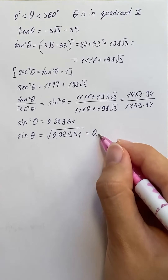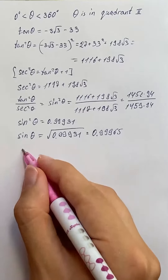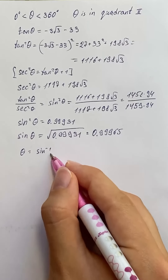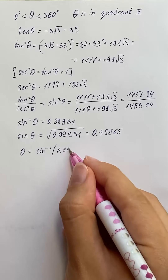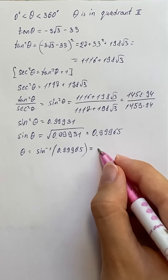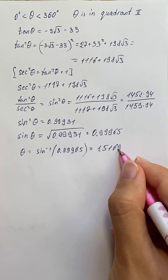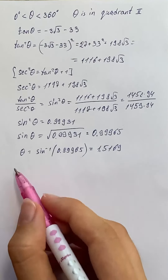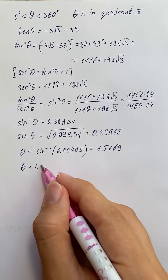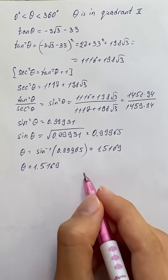That equals 0.99965. Now we take the inverse sine of 0.99965 and we get 1 and 5169 ten-thousandths. Hence theta equals 100 and 1 and 5169 ten-thousandths.